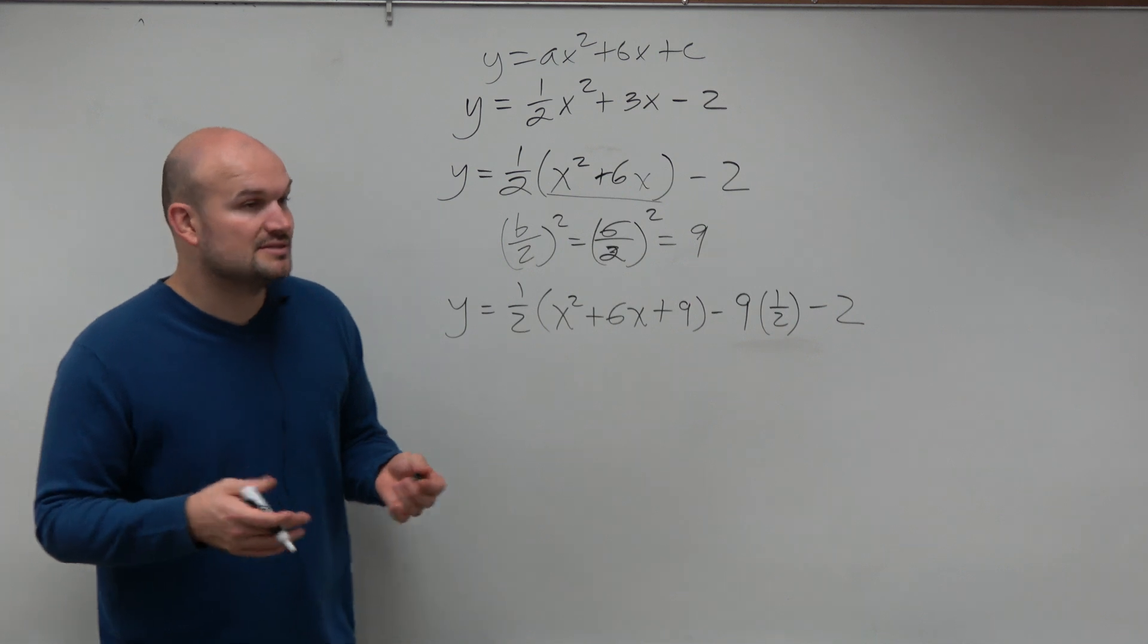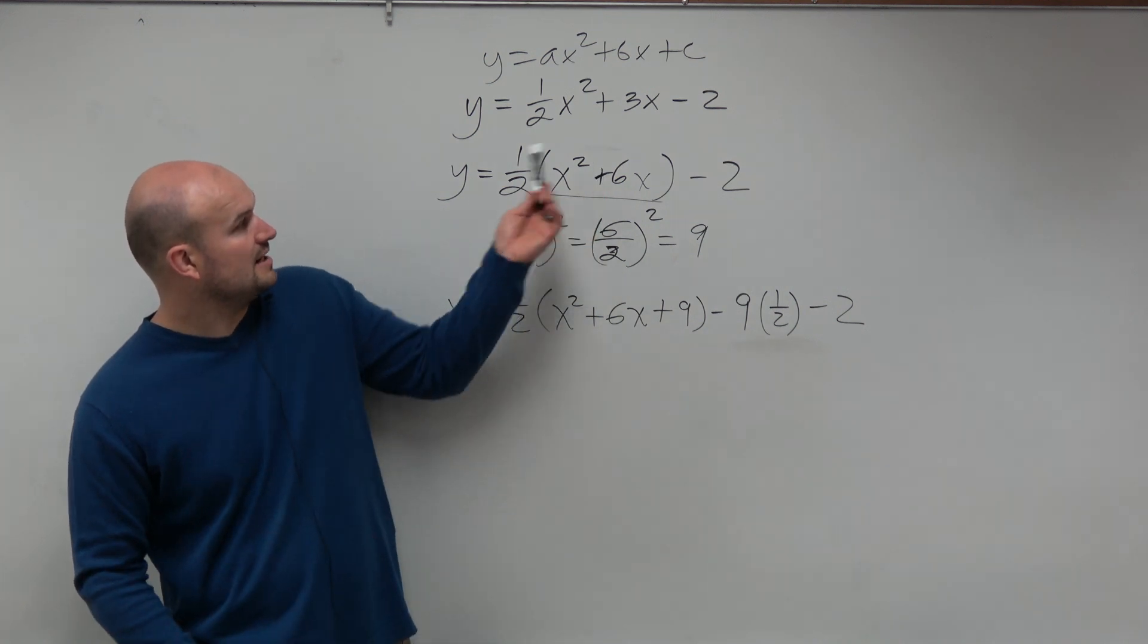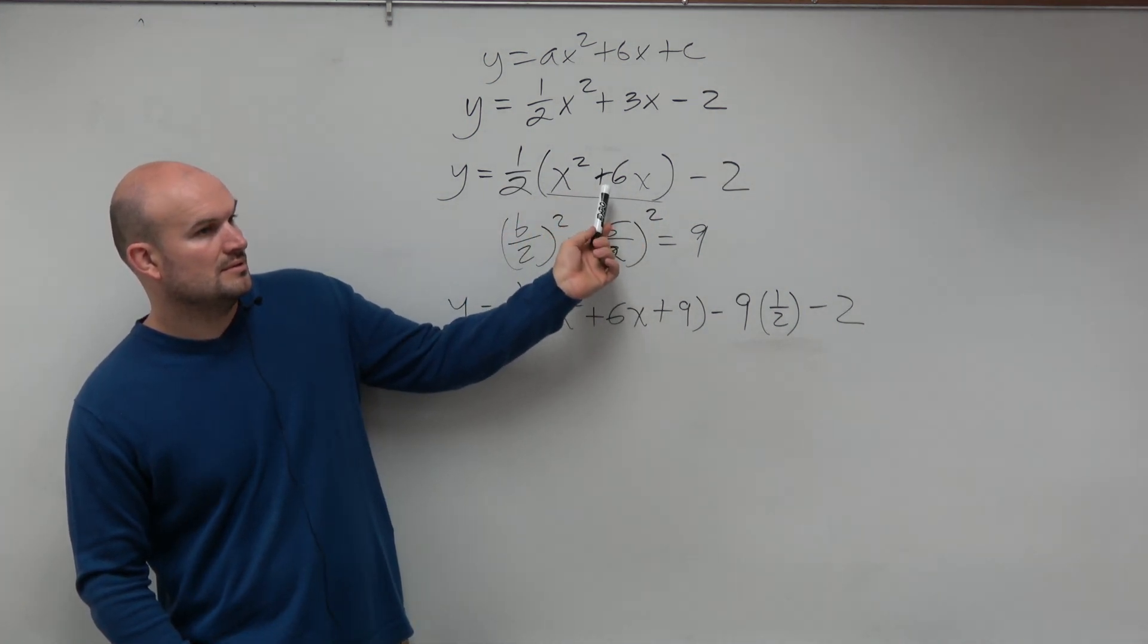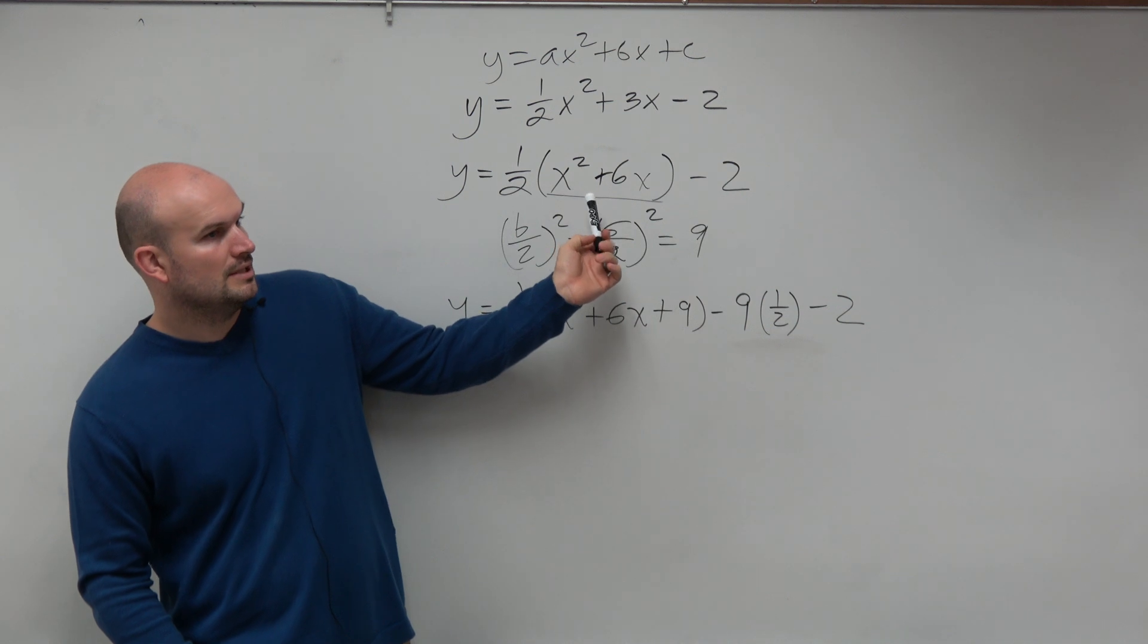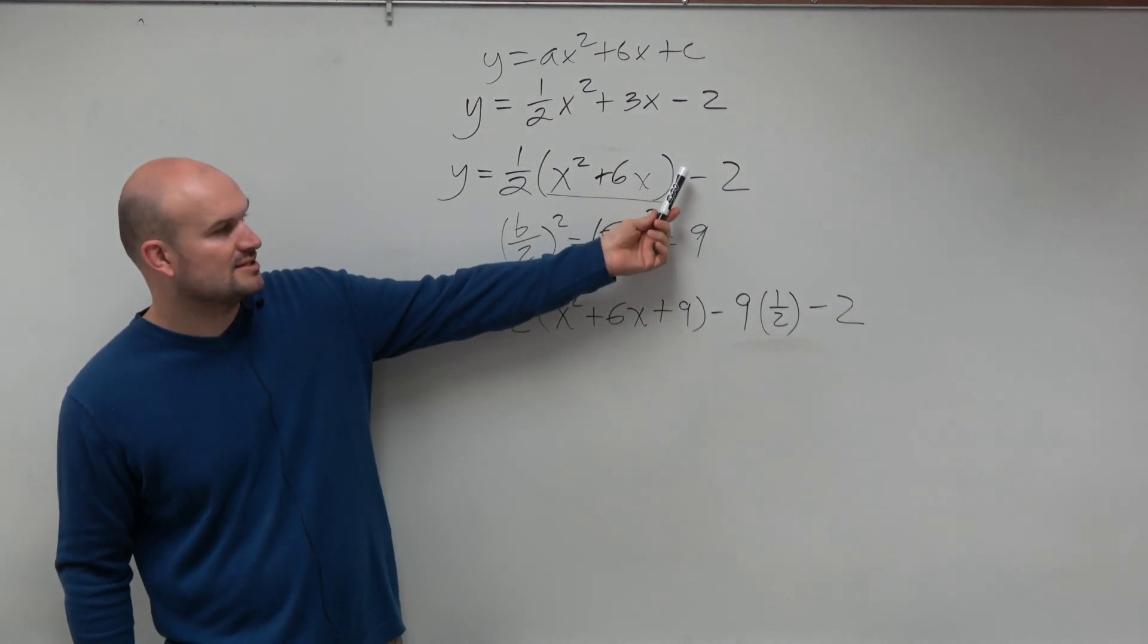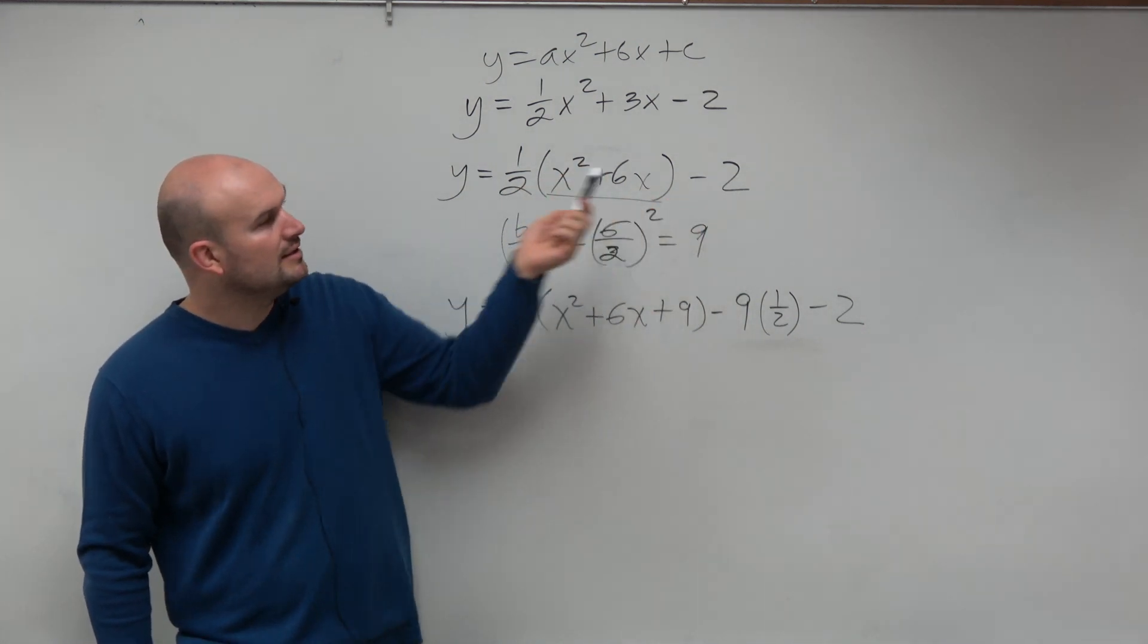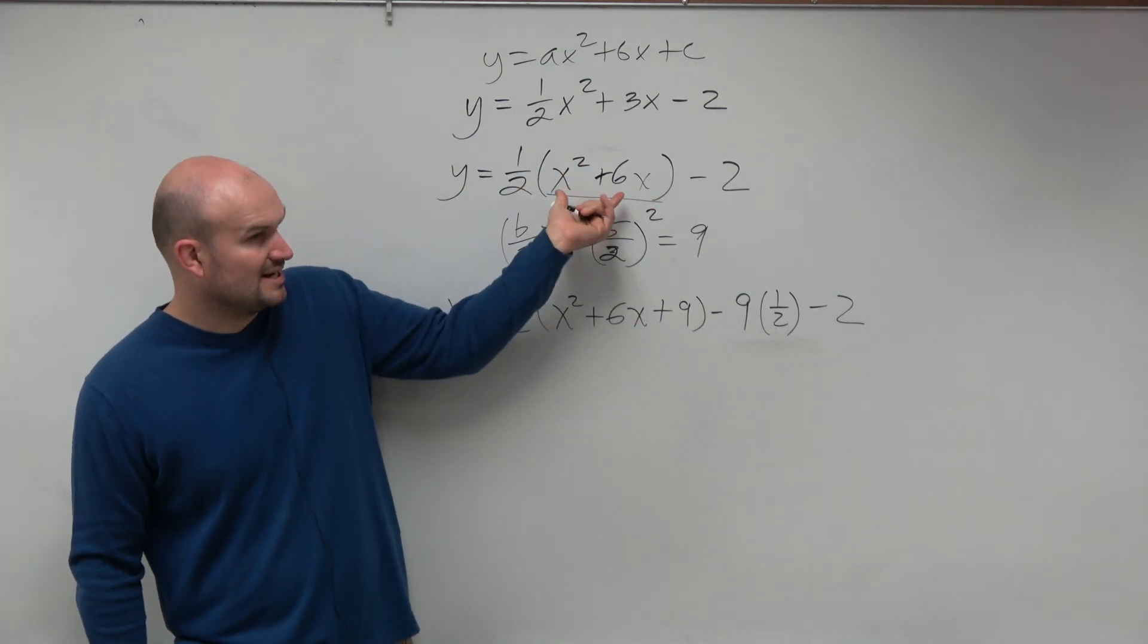So again, yes? Why didn't you factor out 1 half with negative 2 at the beginning? I did not. I only factored the 1 half out of these two terms. But why didn't you? Because it would make it more complicated. Because if you're factoring out the 1 half, then you've got to change how your parentheses are. And then you'd have to multiply that 1 half back through again.